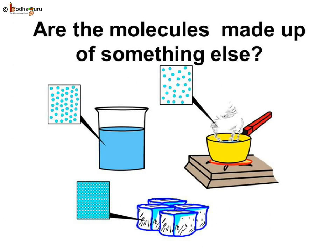So, we know when matter changes its state, the molecules of matter remain the same — only the space between the molecules changes. The question is: why are some changes reversible, that is physical changes, and some are irreversible, that is chemical changes? This is because the molecules are made up of something else.